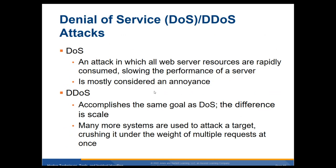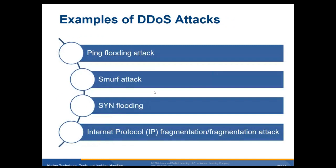DDoS comes from multiple sources, so it's harder to block. It accomplishes the same goal as DoS — the difference is scale. Many more systems are used to attack, crushing the target under the weight of multiple requests. A DNS website was hit by a denial of service attack receiving 1.5 terabits of data at one time, basically shutting them down for about 10 minutes.